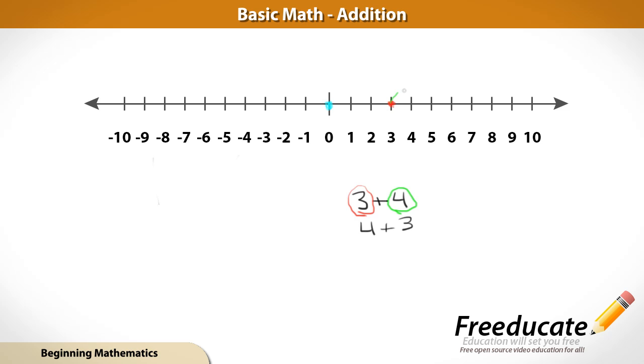So we hop on the number line one, two, three, four times, and we end up right here. Again, we still have seven apples.